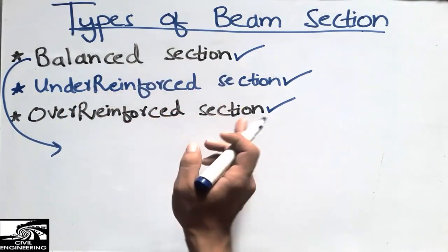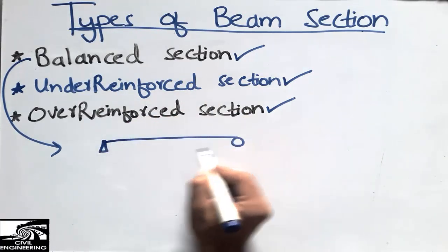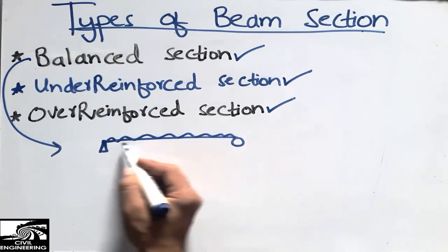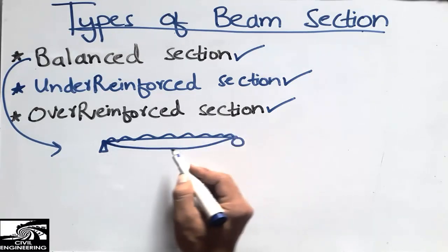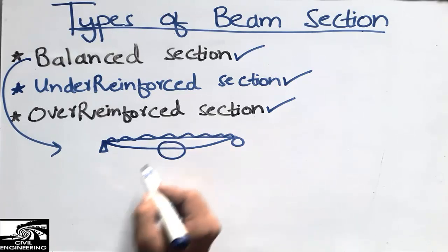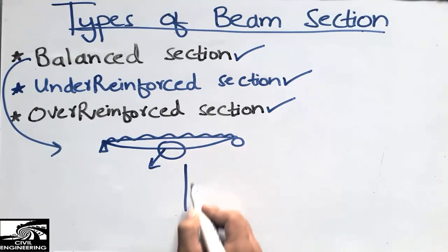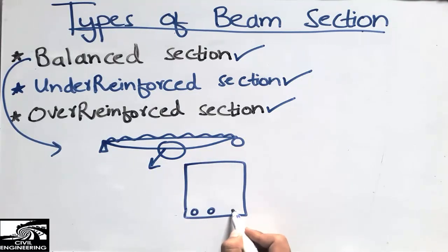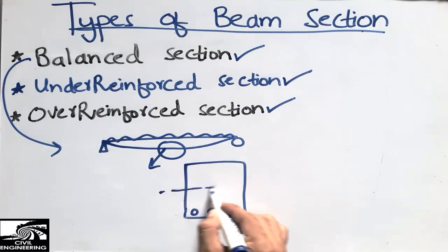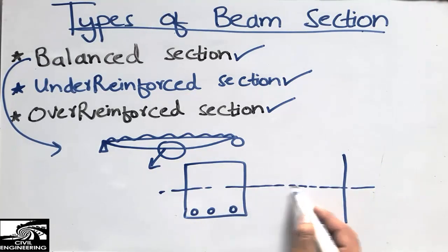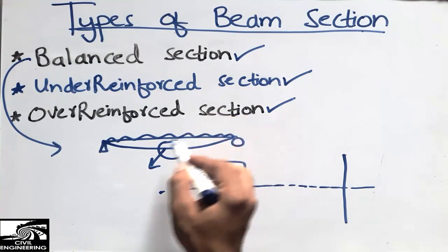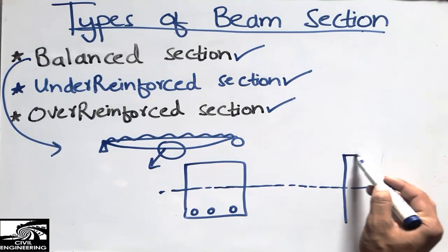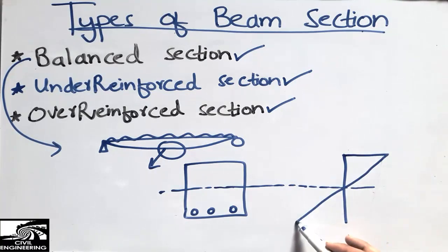To describe the balanced section, I will take an example. This is a simply supported beam with a uniformly distributed load acting on it. Upon loading, the beam will bend, and tension and compression will be created in the beam section. Here we use the reinforcement, and this is the neutral axis of the beam. In the upper portion there will be a compression zone and the bottom will be a tension zone.